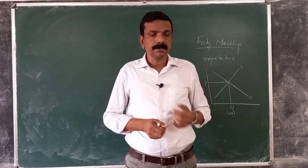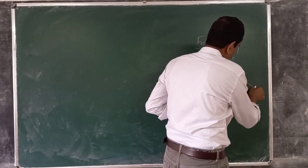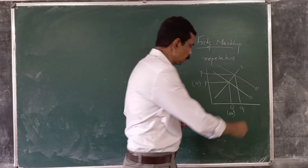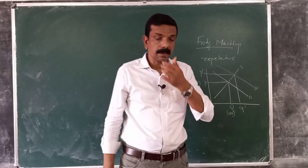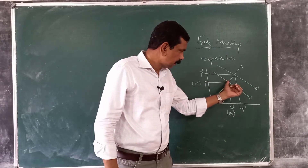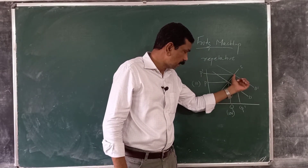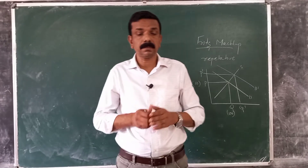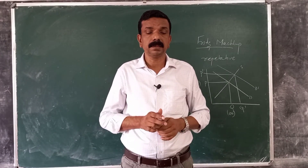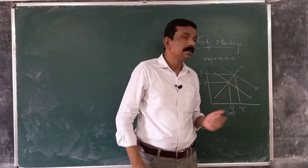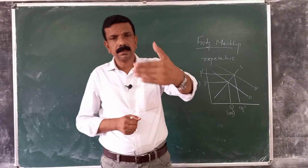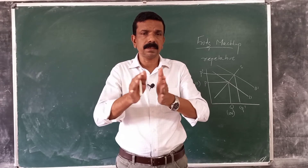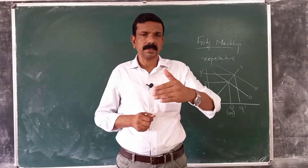Over time, if either supply or demand changes, then equilibrium quantity and price will change from Q to Q' and P to P'. Changes will happen and it will take some time for the economy to move from one equilibrium to another. During this time period, the market will be in a state of disequilibrium, because changes are not instantaneous. Changes and adjustments to the new equilibrium will take time due to various rigidities existing in the economy.